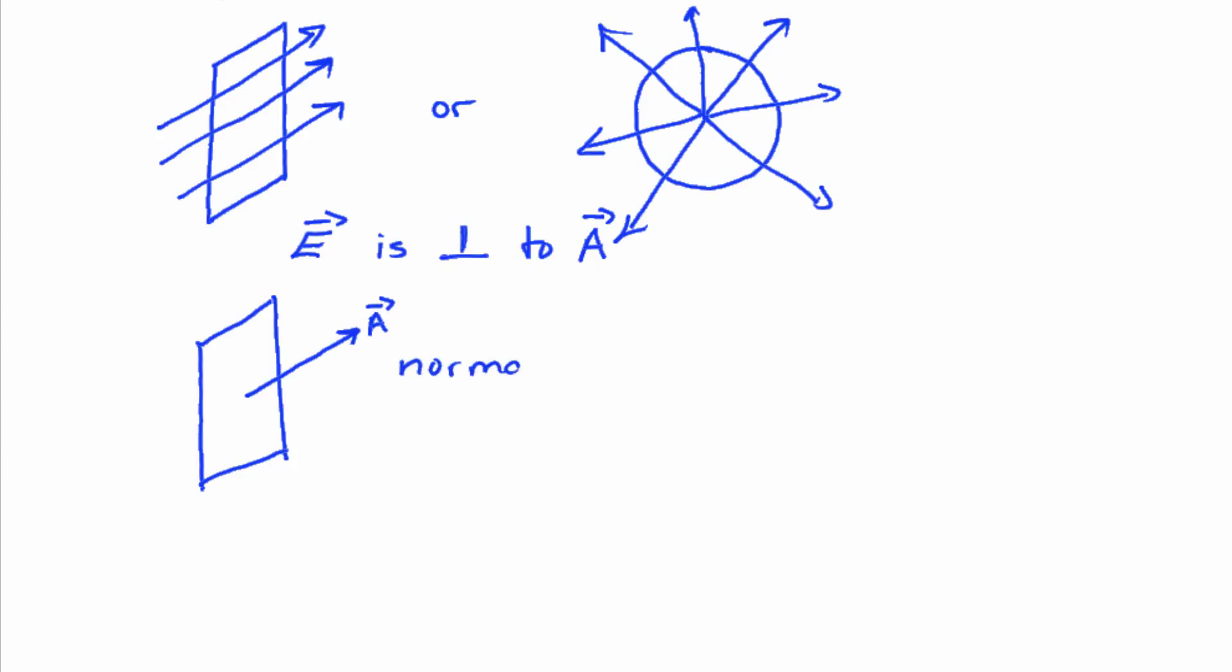So in the cases that the electric field is perpendicular to the surface, then we can write flux as just the magnitude of the electric field times the area. Again, this is only when it's perpendicular to the surface.